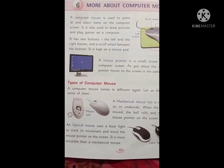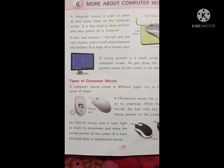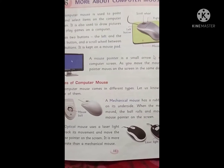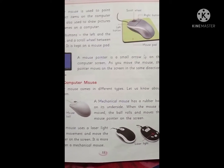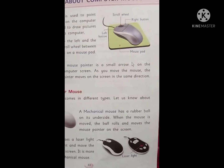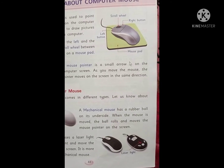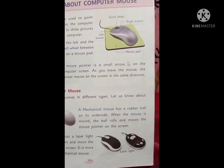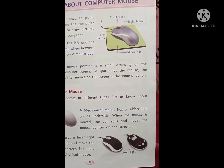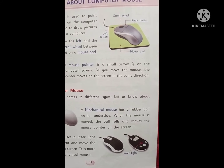Computer mouse has how many buttons? Two buttons — left button and right button, and in the center there is a scroll wheel. In this picture, you can see the left button, scroll wheel, and right button. We keep this mouse on a mouse pad.